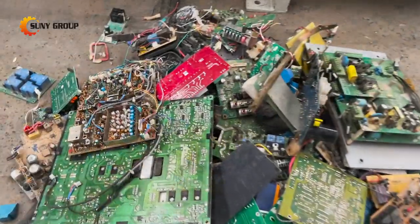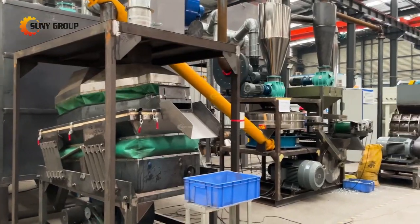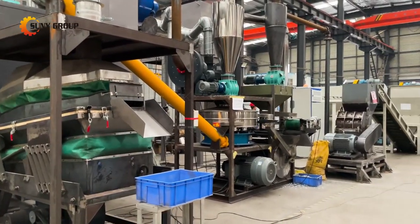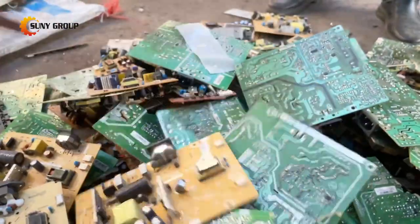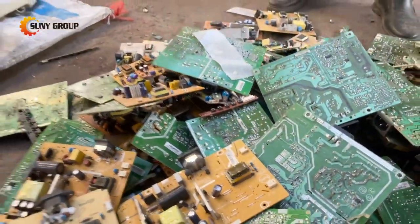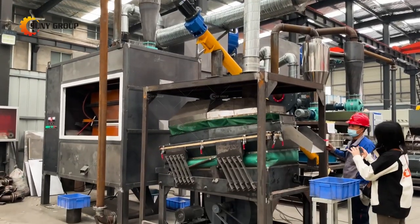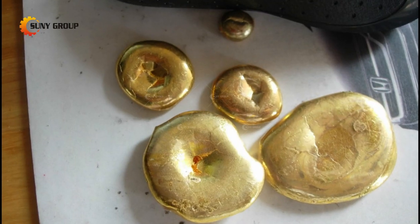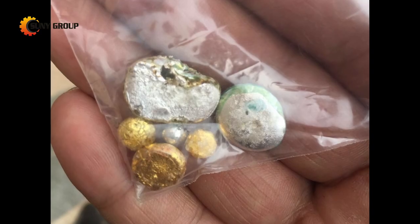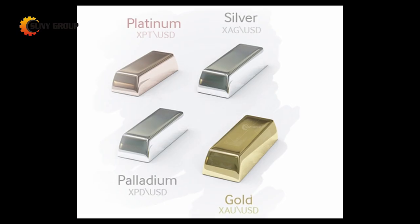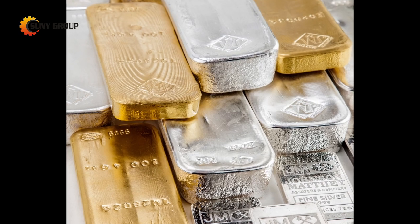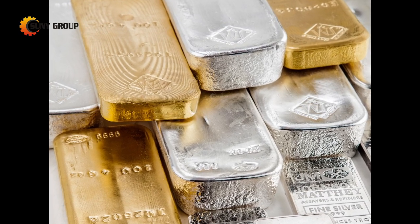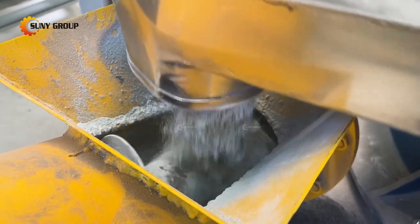The metal in the circuit boards is hundreds of times that of the metal in ordinary minerals. The metal content is as high as 40%, and the most is copper. In addition, there are gold, tin, nickel, lead, silicon, and other metals. There is no lack of rare metals, and the content of such metals in nature is usually only 3-5%.